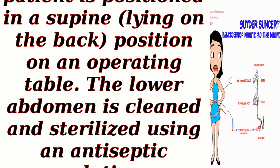Step 1: Preparation. The patient is positioned in a supine position — lying on the back — on an operating table. The lower abdomen is cleaned and sterilized using an antiseptic solution.